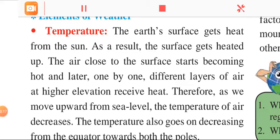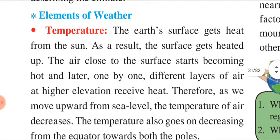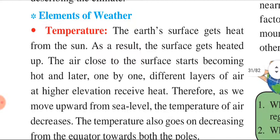First, we are going to study about temperature. The earth's surface gets heat from the sun. As a result, the surface gets heated up, and the air close to the surface starts becoming hot. Later, one by one, different layers of air at higher elevations receive heat, so slowly the higher layers are also getting heated.